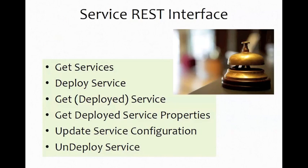The REST interface for the service side is fairly simple. You can get services and deploy services. You can also get a list of deployed services — showing services that are deployed and the configuration passed in at deployment. Getting properties for a deployed service passes all the way down to the service container to get runtime properties, including how far along the service is and its current state. You can also update the service configuration if needed, and undeploy the service once it's complete or no longer needed.